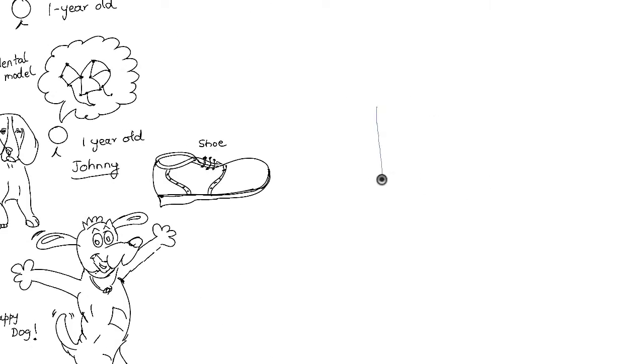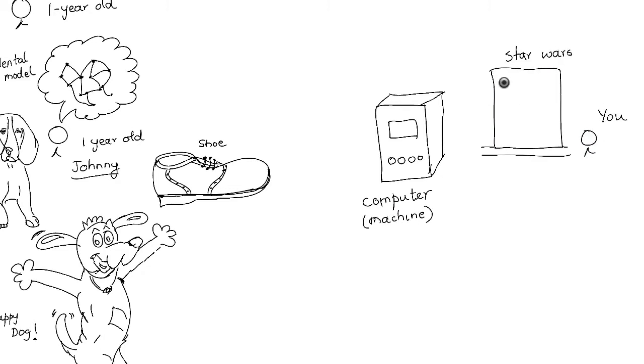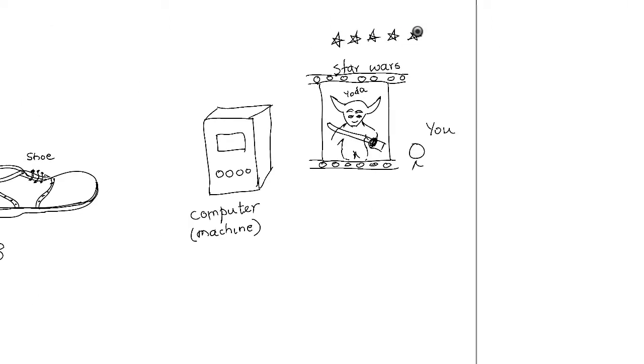This simple phenomena is what we're trying to achieve with machine learning. Say you watched Star Wars The Return of the Jedi on Netflix and you gave it a high rating. Netflix will then recommend similar movies, but this recommendation is done by a machine or a computer. How does that work?